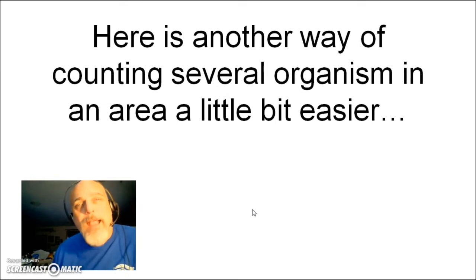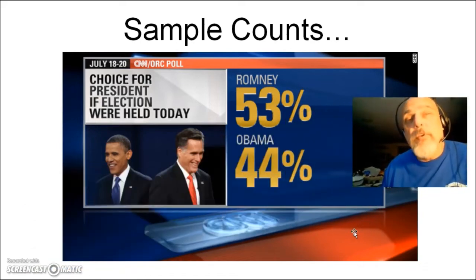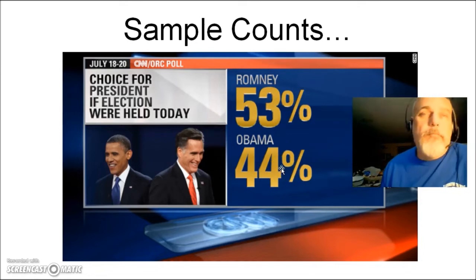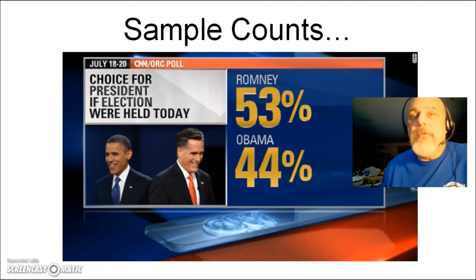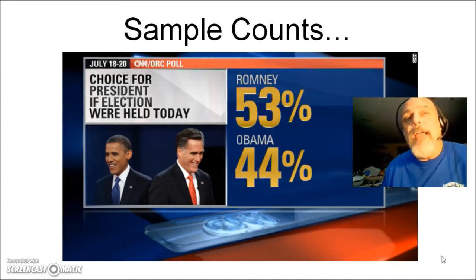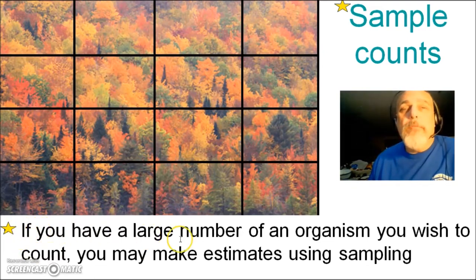Here's another way for counting organisms in an area. Instead of counting every single rabbit, you can use a technique similar to political polls. In a presidential election, they don't call every single voter in the United States — that would be ridiculous. Instead, they use sample counts, calling maybe 5,000 people from various places around the country and extrapolating to figure out what the whole country thinks. Scientists use sample counts for organisms to estimate population density of an ecosystem.